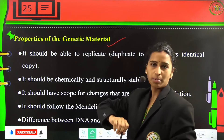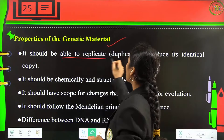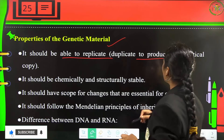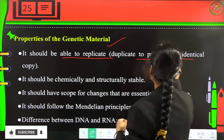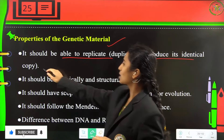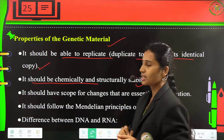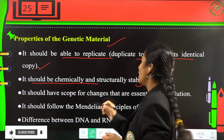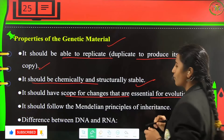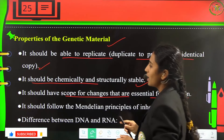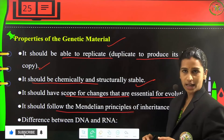Properties of genetic material: it should be able to replicate, producing identical copies. It should be chemically and structurally stable. It should allow scope for changes essential for evolution, and it should follow Mendelian principles of inheritance.